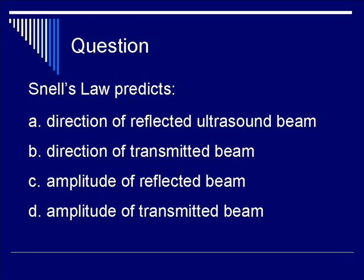C. The amplitude of the reflected beam? Or D. The amplitude of the transmitted beam? If you have the equation in mind, this should be fairly straightforward. The angles in question are theta T and theta I, and therefore we are dealing with angles rather than magnitude. Therefore, the answer is B — the direction of the transmitted beam. Recall, sine of theta T over sine of theta I is determined by the ratio of the speeds of sound of the two media.